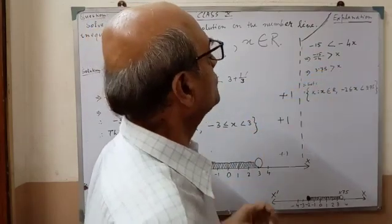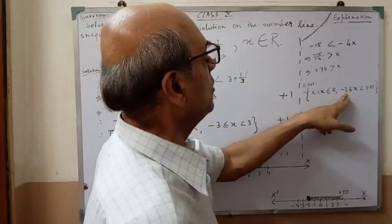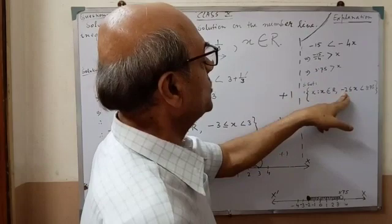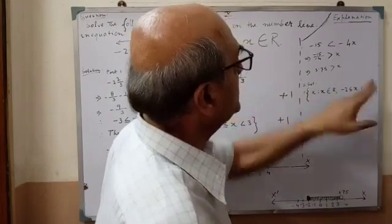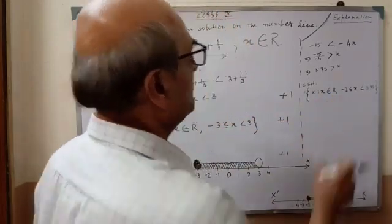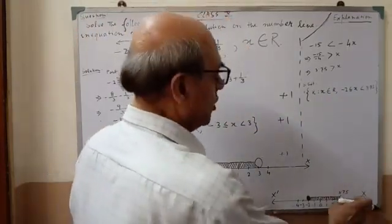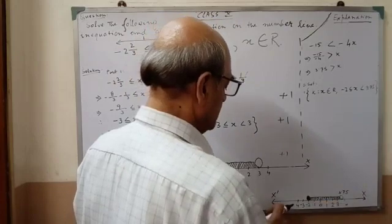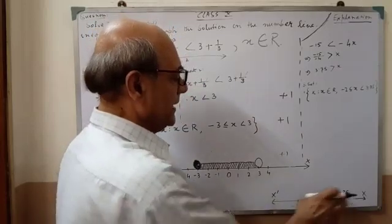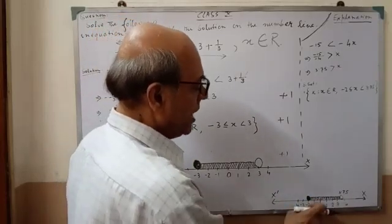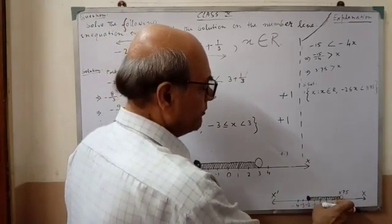After that, you have to write the solution set in this way: x such that x belongs to R. The minus value you always write first — so suppose the value is minus 2 less than or equal to x less than 3.75. Then you have to represent the solution set on the number line. Same way, draw a straight line, put the arrow marks on either side, give the name x, x dash, and draw the scale. On either side, you have to give one more extra value.